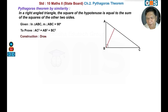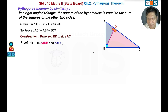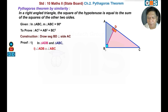Construction: BD perpendicular to AC, with D between A and C. Proof: In triangle ADB and triangle ABC, angle ADB is congruent to angle ABC, each equal to 90 degrees.